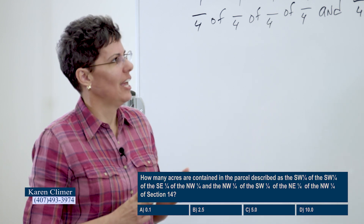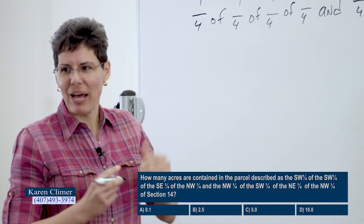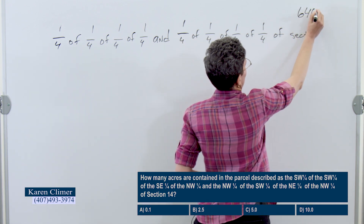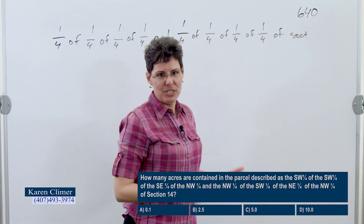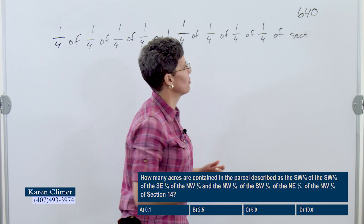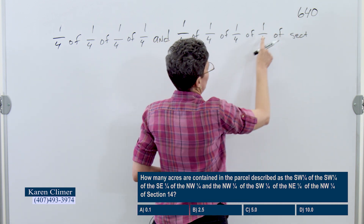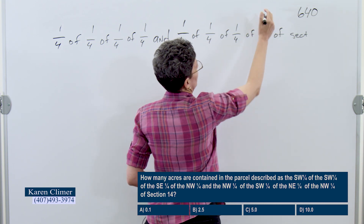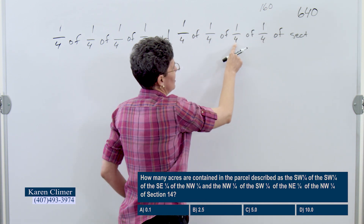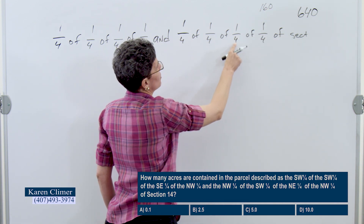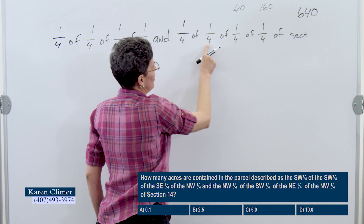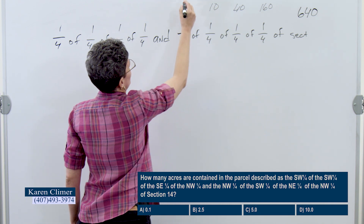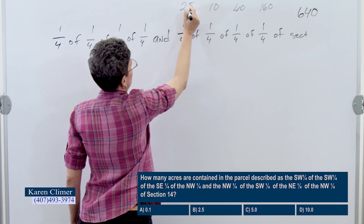I'm going to teach you two ways to do this. The first way I call the backwards way, because we're going to work backwards. A section has 640 acres — you need to know that number. Then you're going to divide by the denominator. So 640 divided by 4 is 160. Divided by 4 is 40. Divided by 4 is 10. Divided by 4 is 2.5.